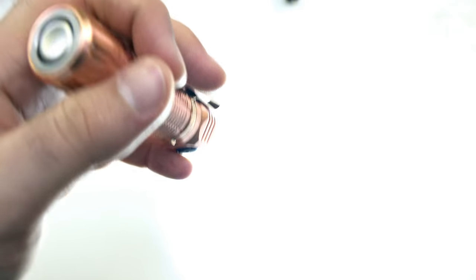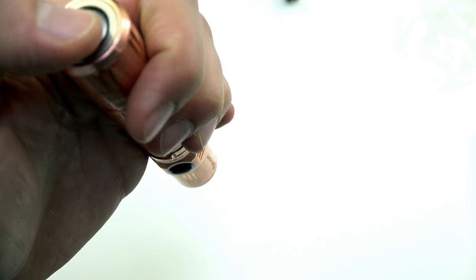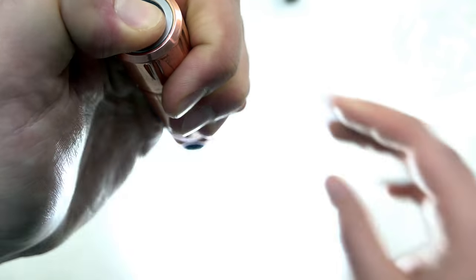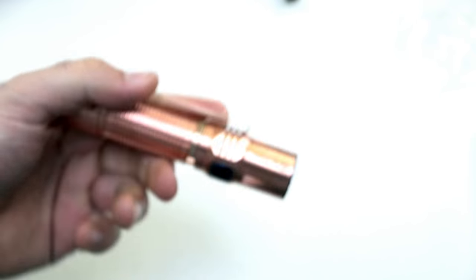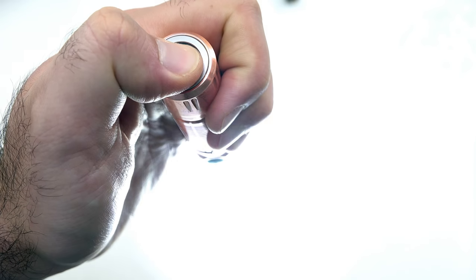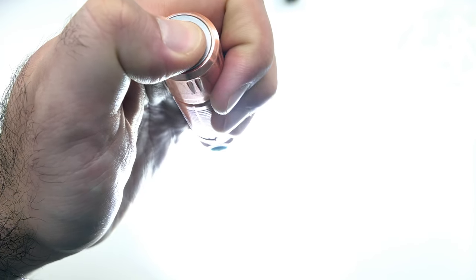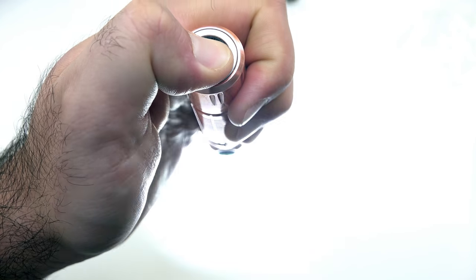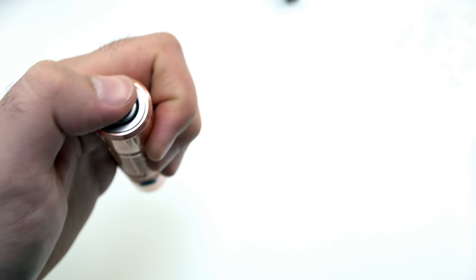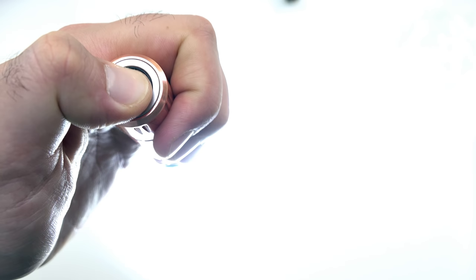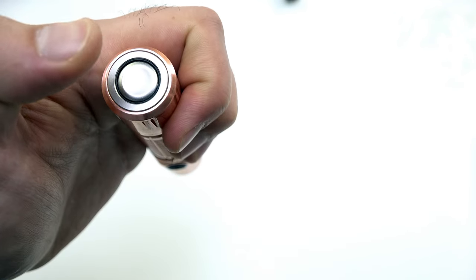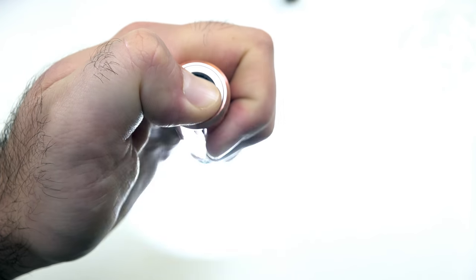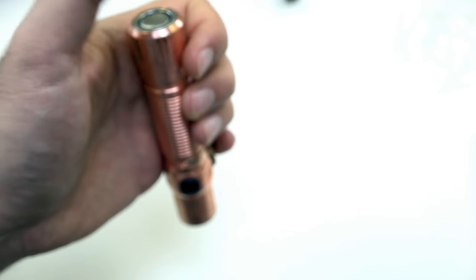If you want to put it into the enhanced tactical mode, basically you'll press down, hold it down, and then hit the side switch at the same time. Now it's in the enhanced tactical mode. You can still press half, do the soft half press for momentary, but then if you fully click in, it's going to do momentary strobe. When you let go, it's still going to turn off.